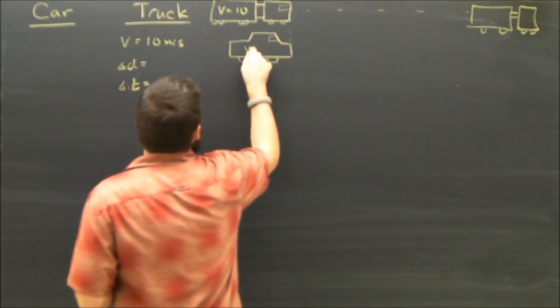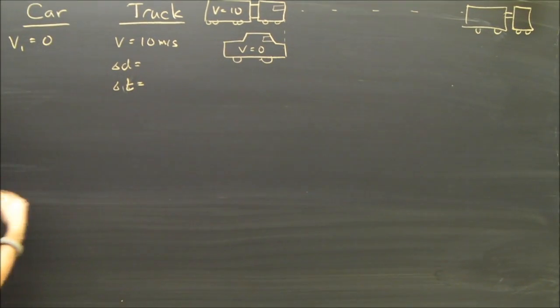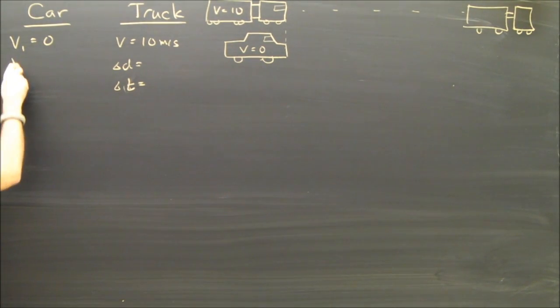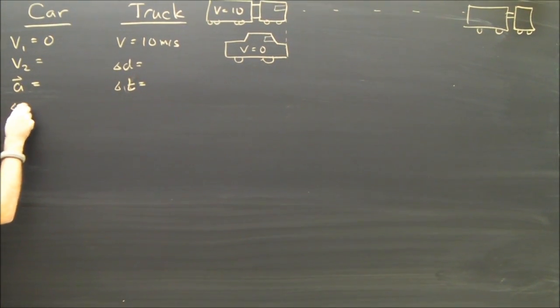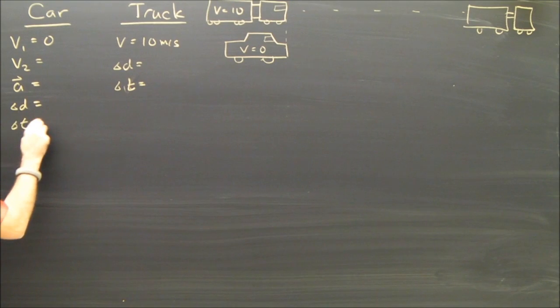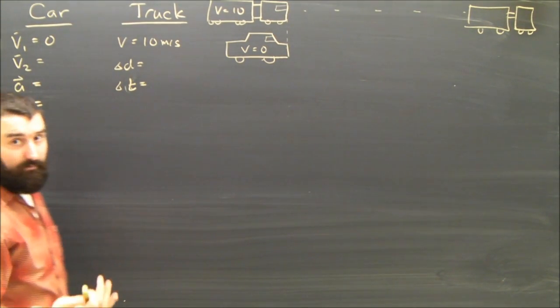The car started with a velocity of 0. So its initial velocity was 0. V1 is 0 for the car. Once I write v1, I automatically write A, D, T, V2 because I know I've got a big 5 problem on my hands. So I'm going to write all 5 of my variables. No problem.